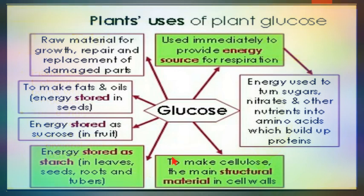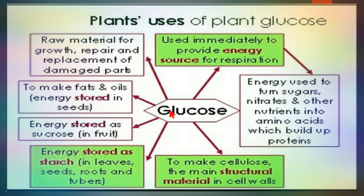So, to summarize the uses of glucose in plants: glucose can be used immediately to provide energy — it is an energy source — and it is a raw material for growth, repair, and replacement of damaged parts. It is also used to make fats and oils, which are stored in seeds and fruits.